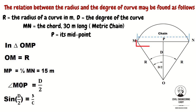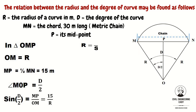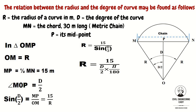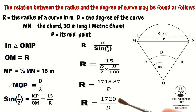Sine of D/2 equals MP divided by OM, which equals 15 divided by R. So R equals 15 divided by sine of D/2. When D is small, sine of D/2 may be taken approximately equal to D/2 in radians. Therefore R equals 15 divided by D/2, where D is in radians. Multiplying with π/180 to convert to degrees, the relation gives R equals 1718.87 divided by D. The approximate relation is R equals 1720 divided by D.